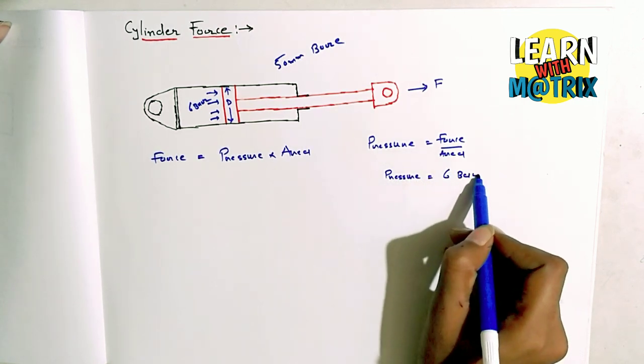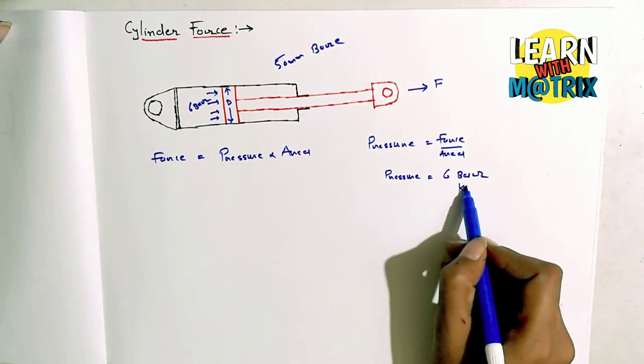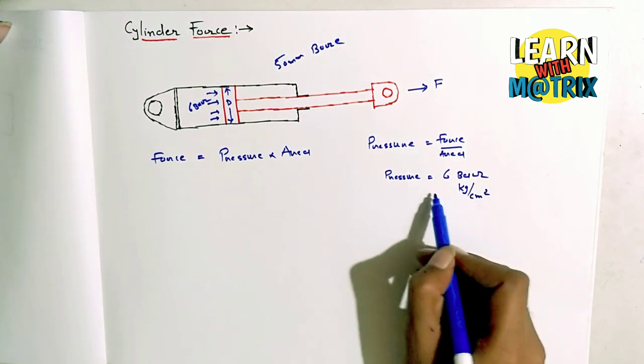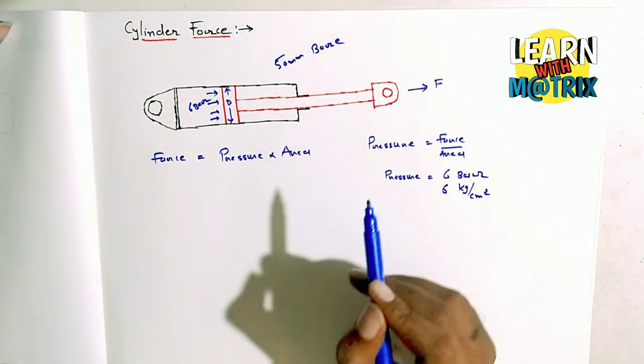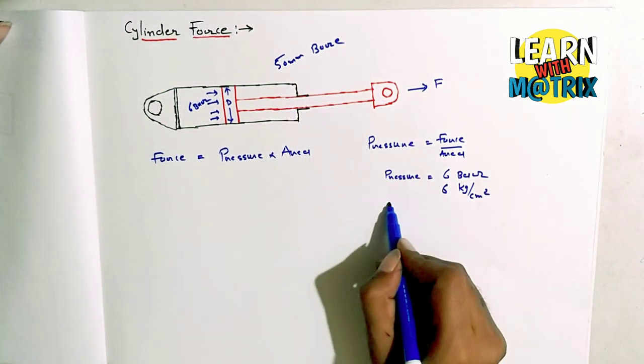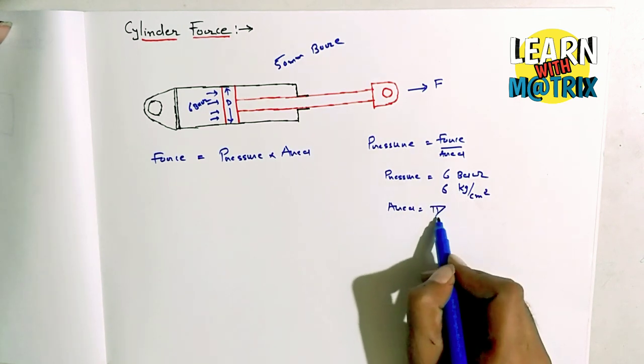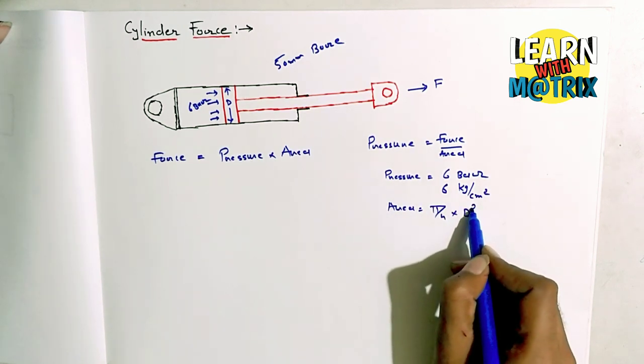is six bar. Bar is kg per centimeter square, and 15 mm bore size. So area is equal to pi by 4 d square.